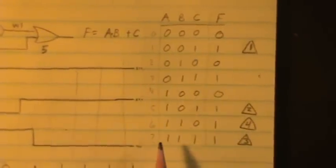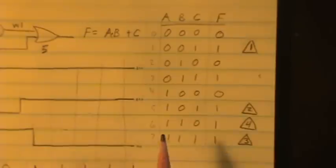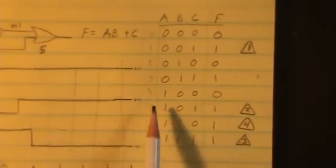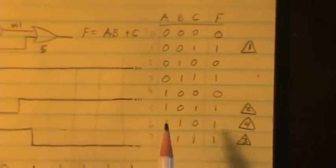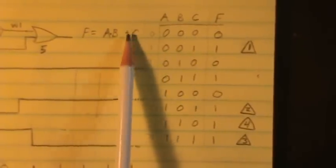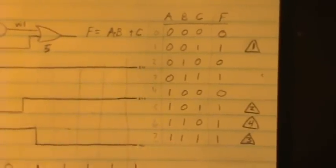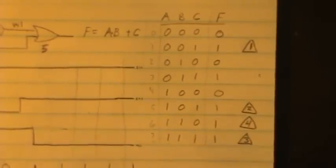There will be eight entries because we have three variables A, B, and C: 0, 1, 0, 1, 0, 1, 0, 1 for A; 0, 0, 1, 1, 0, 0, 1, 1 for B; four zeros, four ones for C. Any time that C is a one, the whole function is going to be one because it's OR C. So those are easy: 1, 1, 1, 1.